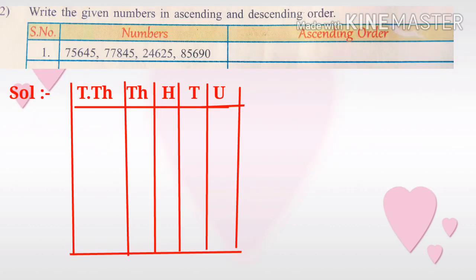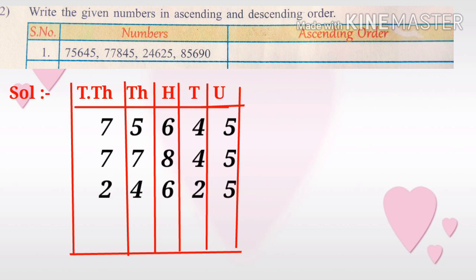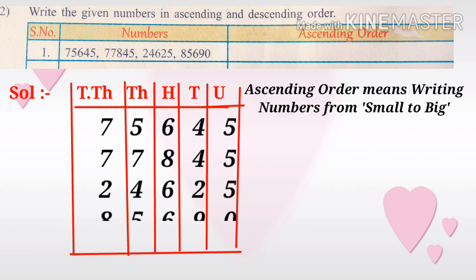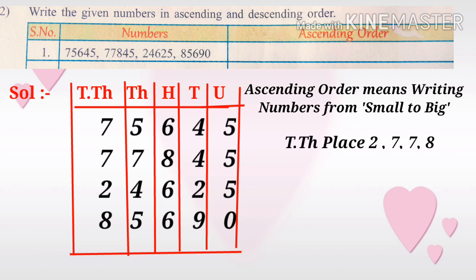Ascending order: Write the given numbers in their place values exactly. Ascending order means writing numbers from small to big. First compare the numbers from the ten thousands place — the digits from small to big are 2, 7, 7, 8.